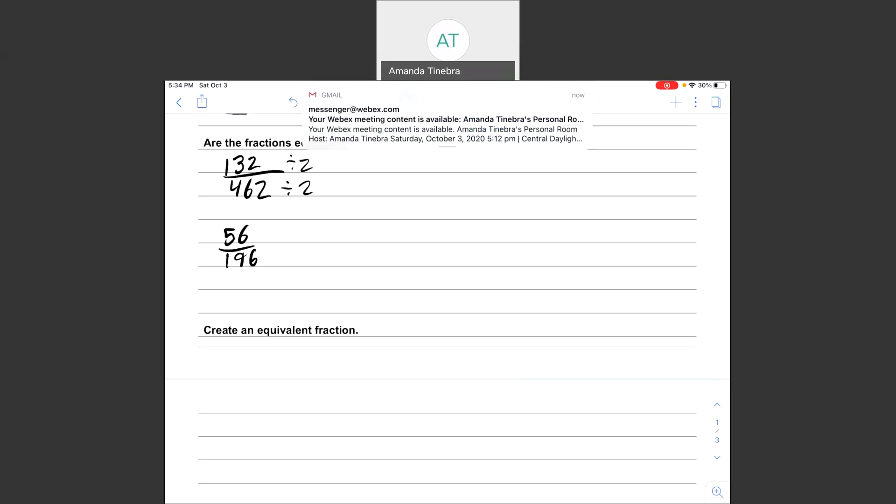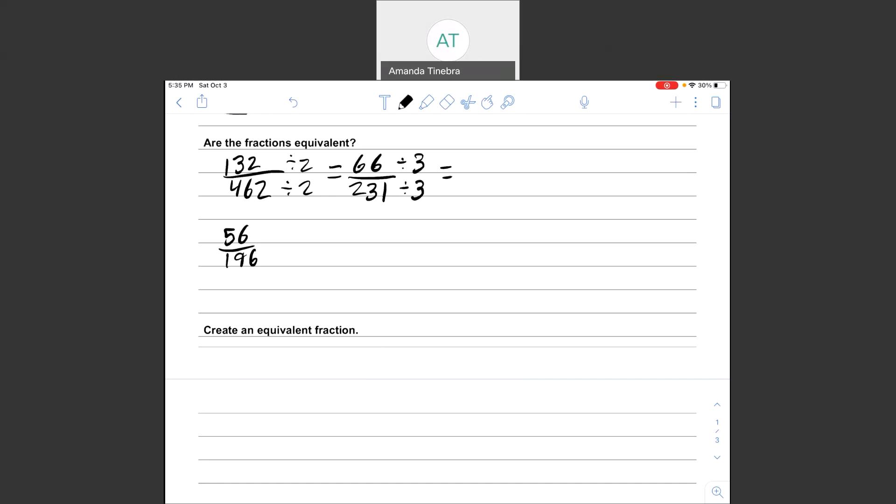132 divided by 2 gives me 66. 462 divided by 2 is 231. Now these are still kind of hard numbers, so I might try these on my calculator and test whether 2 or 3 or whatever goes into them. Actually, they're both divisible by 3. If you need your calculator to help you do that, go ahead and use your calculator. 66 divided by 3, that's 22. 231 divided by 3, that's 77.